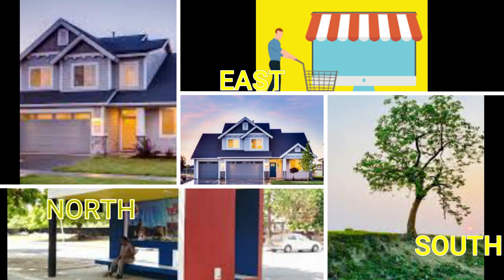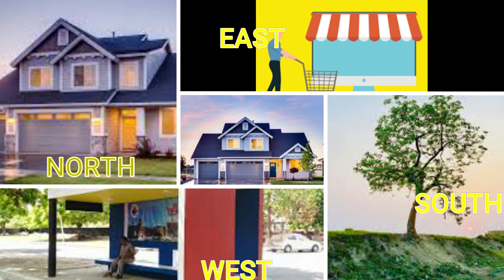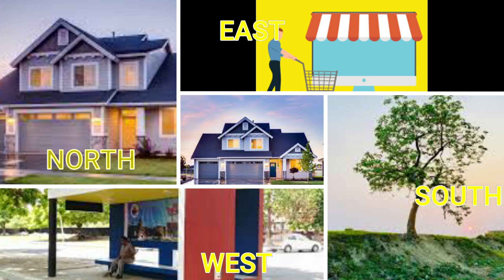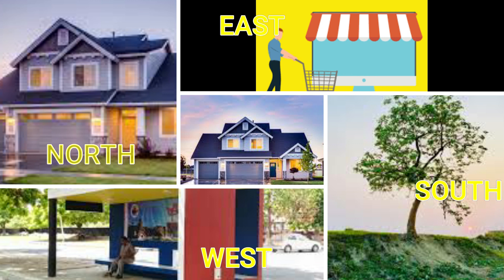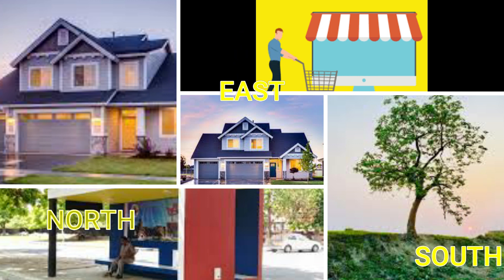Now, consider your house. You can frame the North, East, South, and West directions and also identify the things available near your house — like a neighbor's house, a shop, a tree, a bus stop, and a road. In this way you can locate objects in the North, East, West, and South directions according to your house.